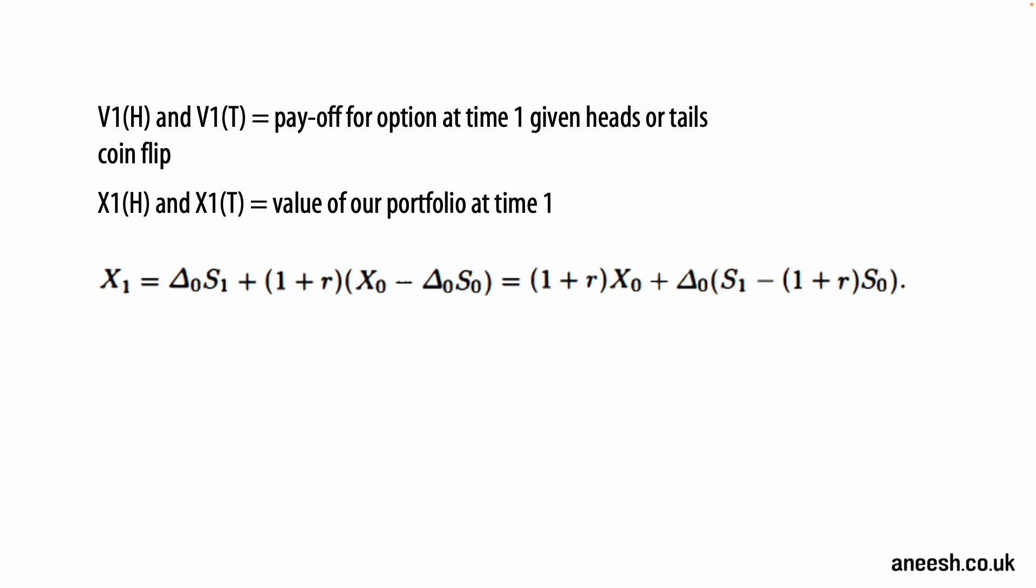If we revisit a formula for our portfolio value at time one, X1, it's equal to delta at time zero multiplied by stock price at time one plus the interest rate for one time period on our position in the money market. And then that money market position is equal to the initial wealth, which is X0, minus the delta multiplied by the stock price at time zero. We can then see how this formula can be simplified by first taking out delta zero and then simplifying the formula by extracting (1+r) by X0 out of the formula, leaving us with the formula for X1 as seen at the top of page six.